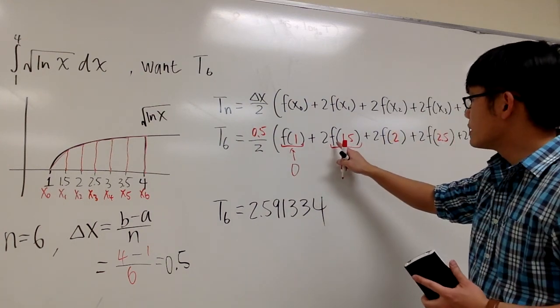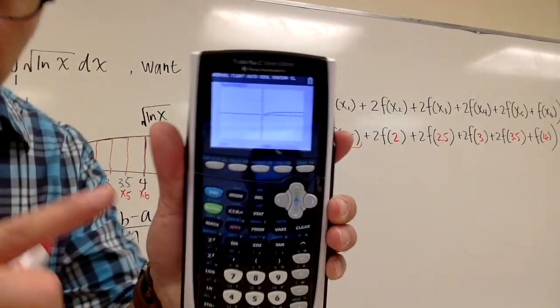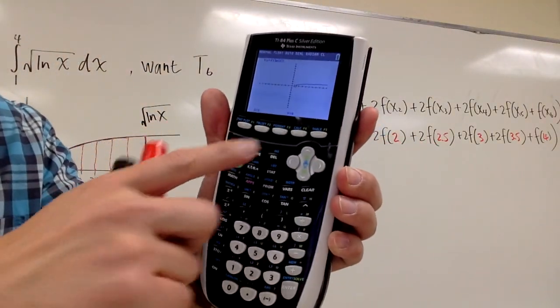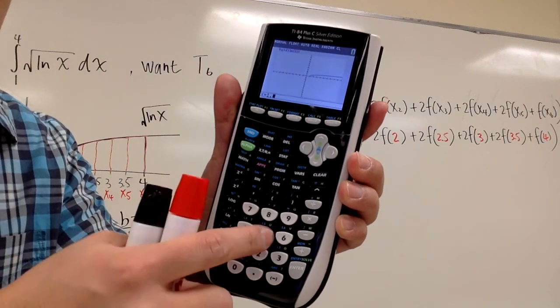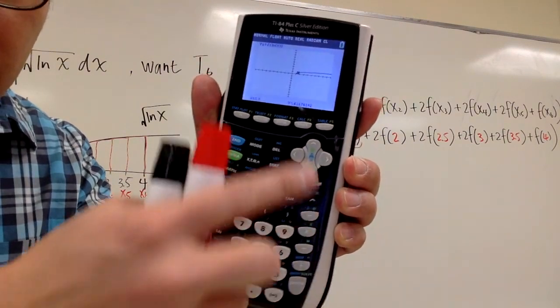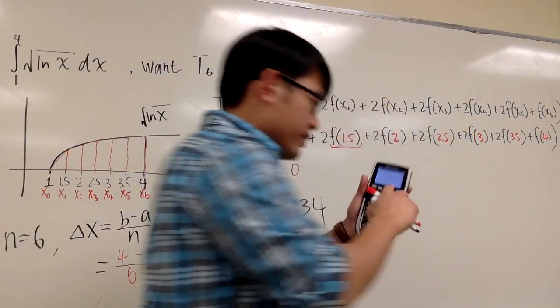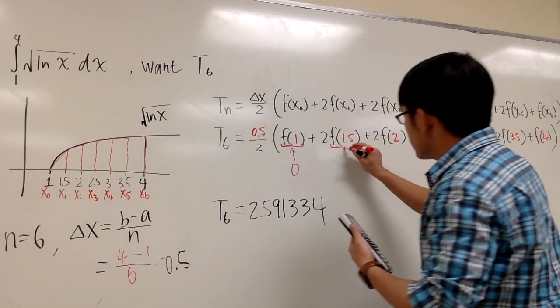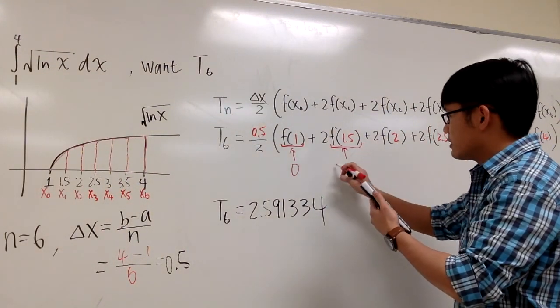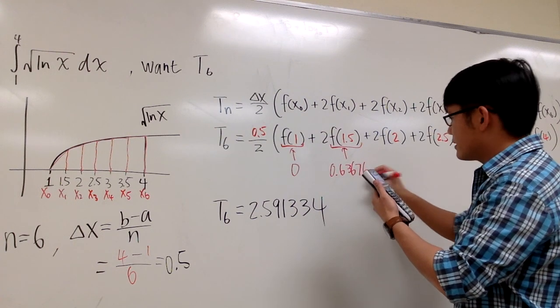And I have to figure out what's f of 1.5. And notice that I don't need to do the second calc again. I can just keep entering 1.5, and then I can get the y value, which is the f of 1.5, which is this number right here. And I'm going to put it down right here for you guys. And this is 0.636761.